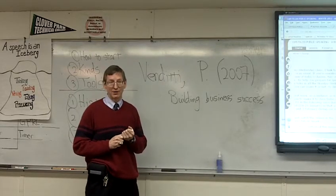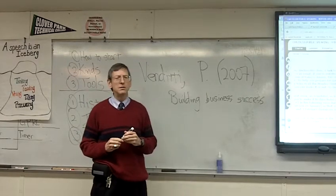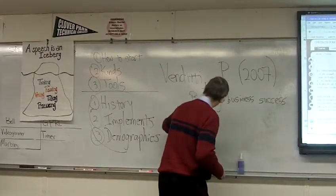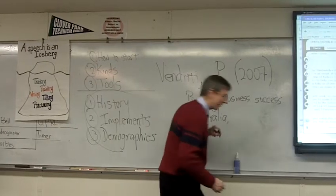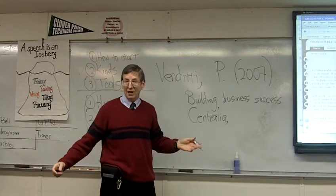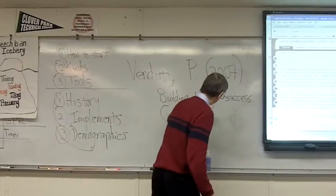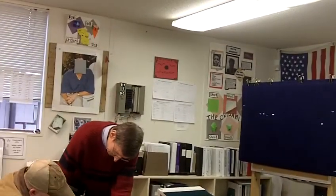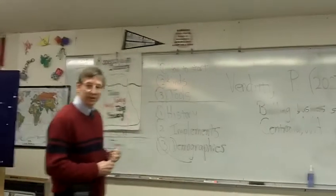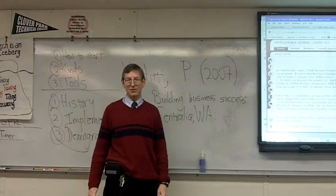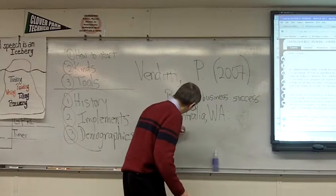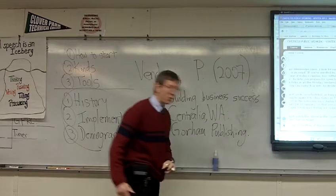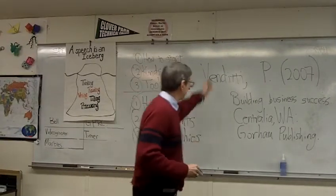Then what comes after the title? The location of the publisher. In this case, was it Centralia or Chehalis? — I think it's Centralia, Washington. Because most people don't know where Centralia is, I have to put the state, but I don't write it out — I use the postal code. Then I put a colon — not a semicolon, not a period, not a comma, but a colon — and then the publisher name, which I'll just call Goron Publishing.